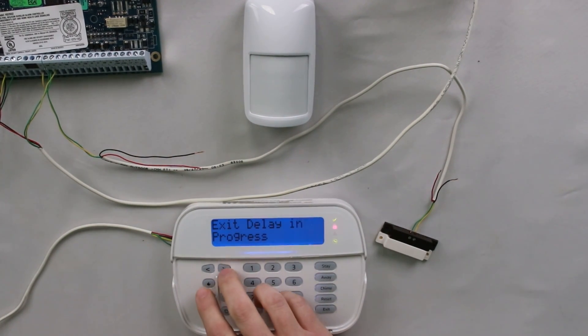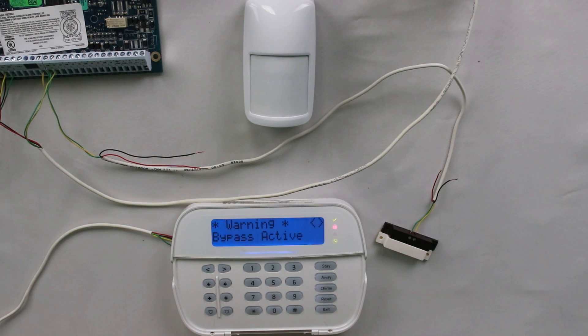So once you start arming, it is going to pop up and say, warning, bypass active. And that is letting you know that it is going to bypass those stay/away zones because it still thinks everybody is in the house.